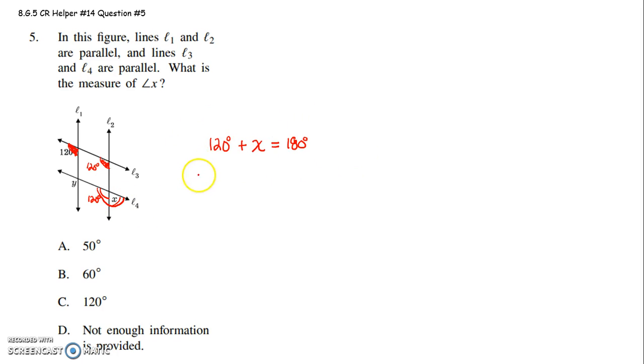So now I'm just going to solve this equation for X. I'm going to subtract 120 from the left side of the equal sign, which means I need to subtract 120 from the right-hand side of the equal sign. There we have X equals 180 minus 120 is 60 degrees.